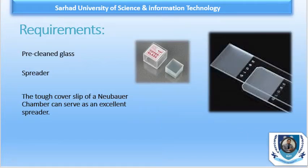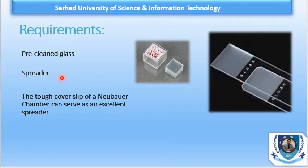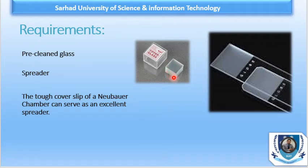The requirements for making a wedge slide are: first, a pre-cleaned glass slide for microscopy, which should be free from grease, dust, or any lint. Second, a spreader — which is also a piece of glass, either a cover slip or a glass slide — that should be narrower than the glass slide. Its edge should be thin, smooth, and polished, because if it is not polished or smooth, we will not get a good peripheral smear.